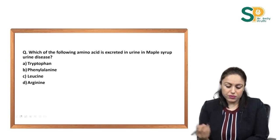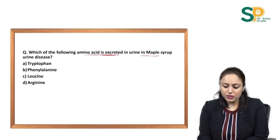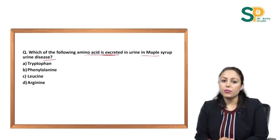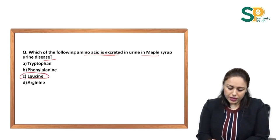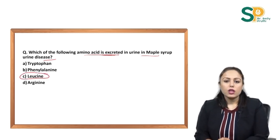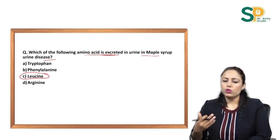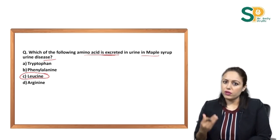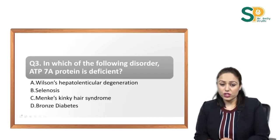Another related question: which amino acid is excreted in urine in maple syrup urine disease? The answer would be leucine, or isoleucine, or valine, depending on which is given in the options.